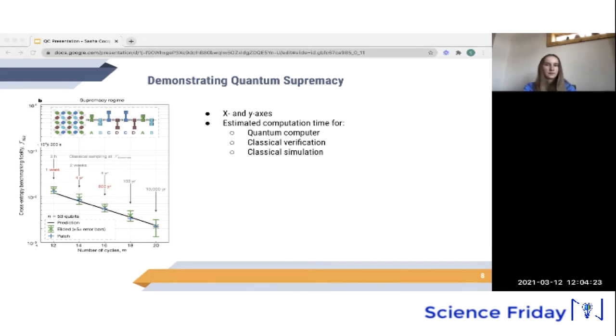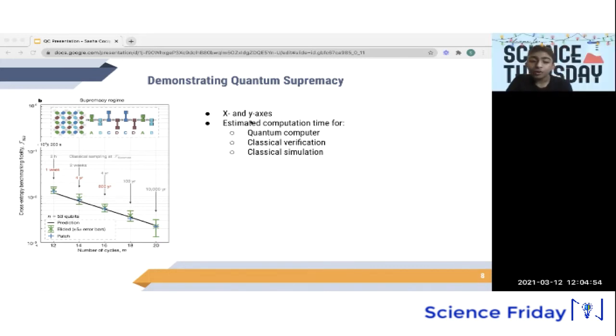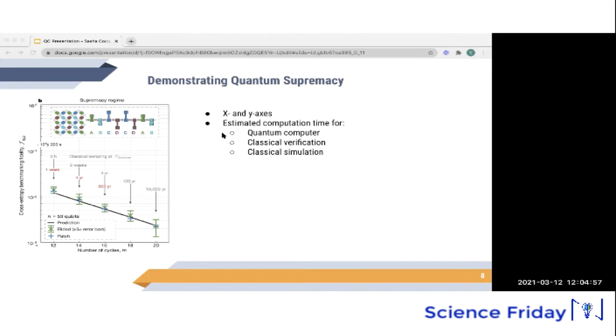So as you can see, the last data point here shows that it would take a classical computer 10,000 years to complete the task. Well, it took the quantum computer only 200 seconds. And it would also take millions of years to classically verify the result. So this is a big deal because supercomputers are powerful machines and the quantum computer was able to achieve the task in far less time. Okay, are there any questions? Yeah, I think there's one question from Amrita.